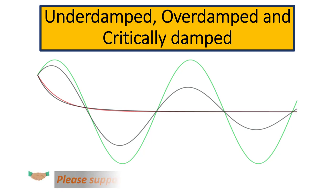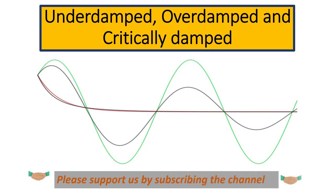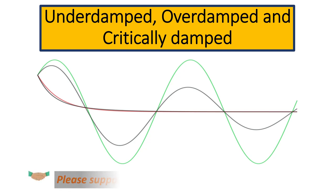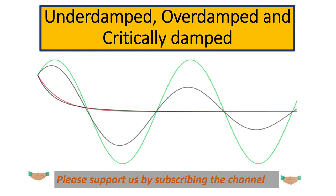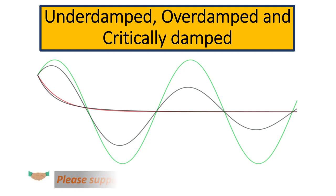In this video we are going to cover underdamped, overdamped, and critically damped systems. Whenever damping is present, the system can be categorized into three sections based upon the damping. If the damping factor is smaller than one, the system is underdamped. If the damping factor is greater than one, it is overdamped. If the damping factor is equal to one, it is critically damped.